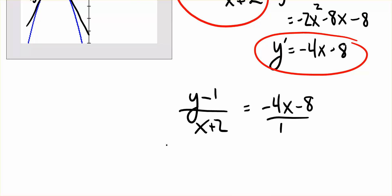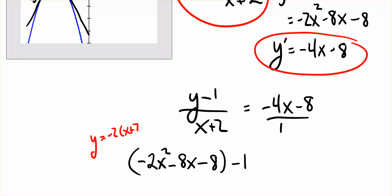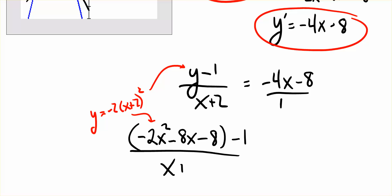So in place of y, we substitute negative 2 times — actually using the already expanded version — negative 2x squared minus 8x minus 8. And then we subtract 1, giving us the y minus 1 expression. This is the key: making sure we get down to only one variable, with everything expressed in terms of x.